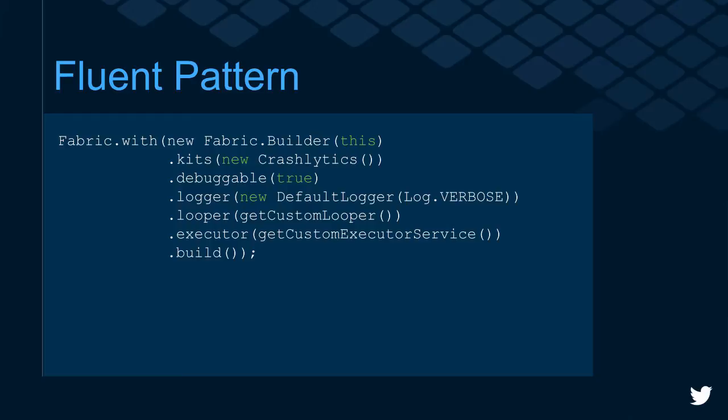We extended that Builder pattern to Fabric itself as well. If you don't want to use Fabric with just that one line, we allow you to pass in a Builder object where you can specify additional information — turn on debug mode, pass your own thread pool executor, put in your own looper, or set a custom logger. The goal was to make it stupidly easy for developers to get started right away, but give Android experts the flexibility they might need.